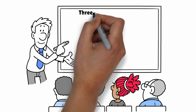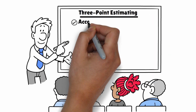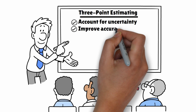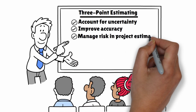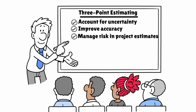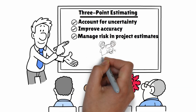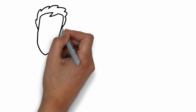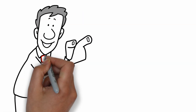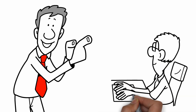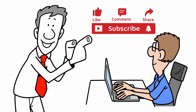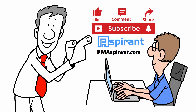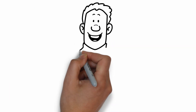In summary, three-point estimating is a powerful tool for project managers to account for uncertainty, improve accuracy, and manage risk in project estimates. Mastering this technique will help you create more reliable project plans. If you found this video helpful, make sure to give it a thumbs up and don't forget to subscribe to PM Aspirant for more project management insights.